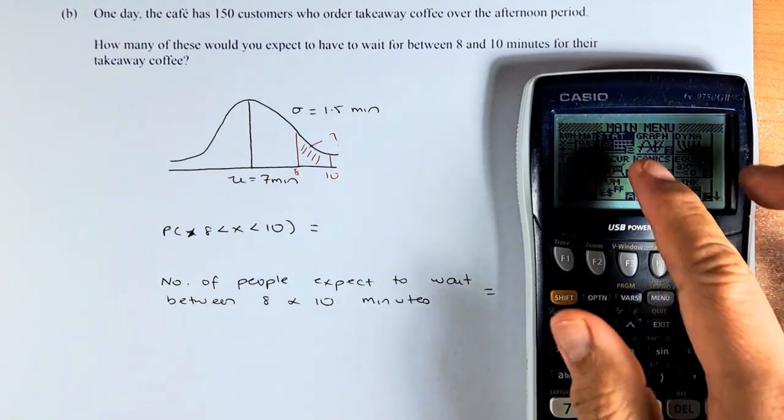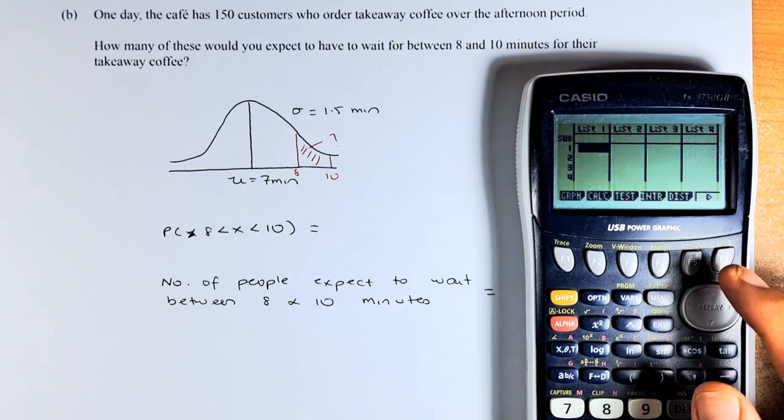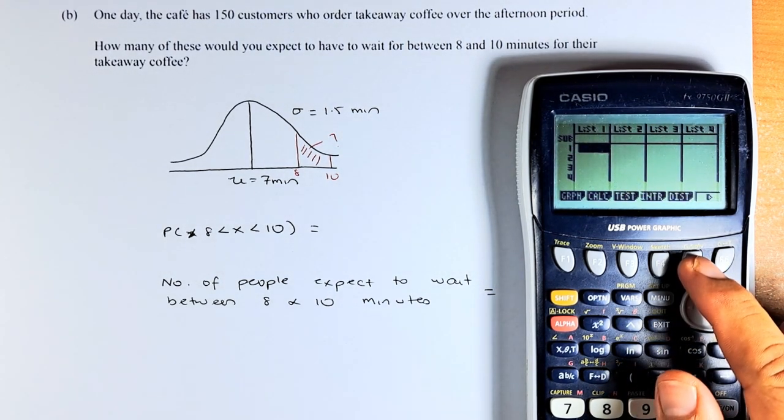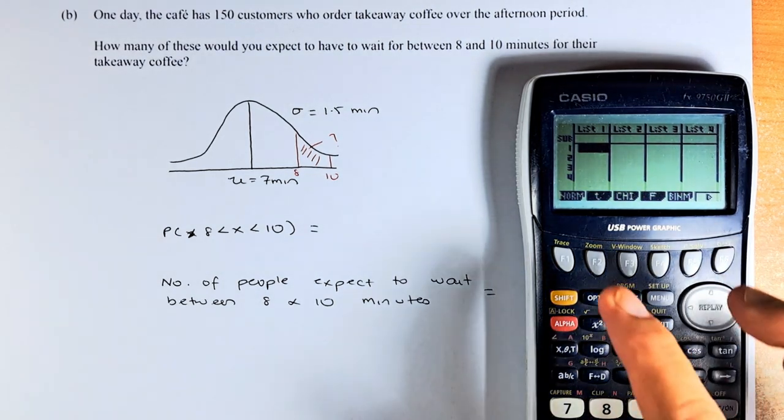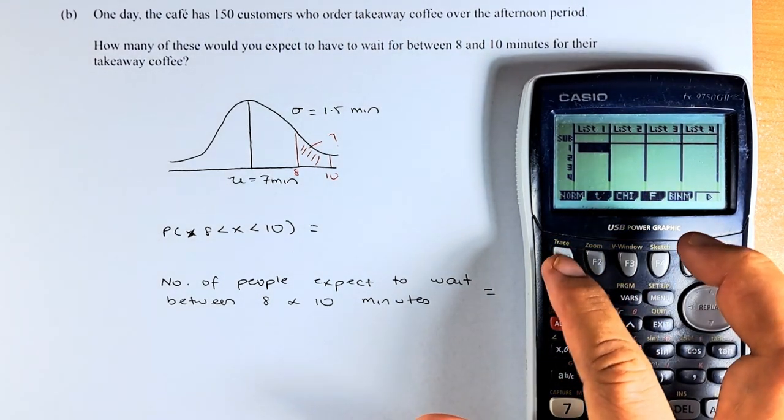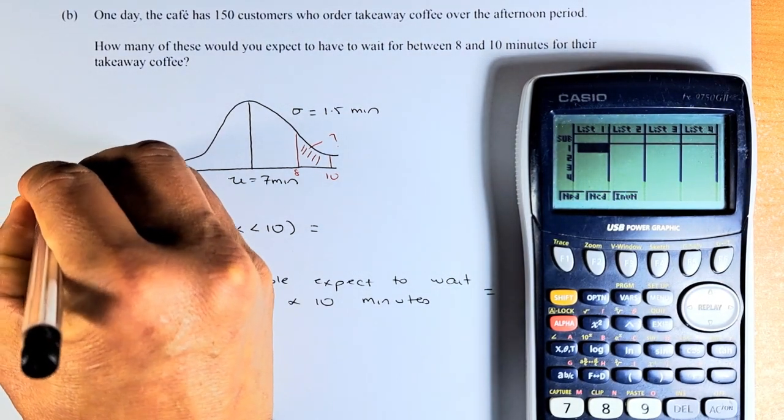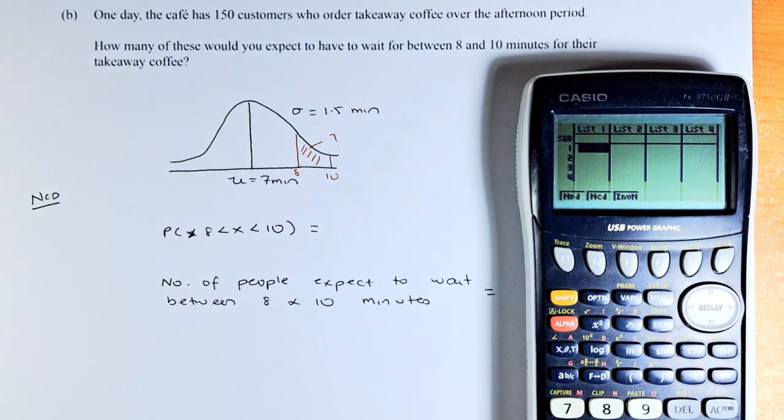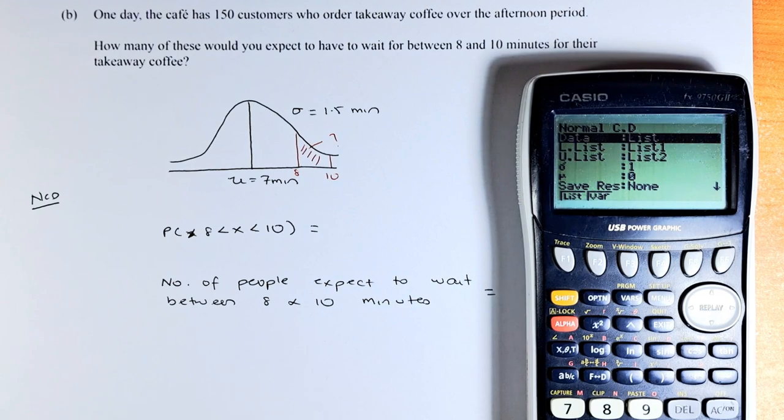We're going to put it under statistics. By now, you should be familiar with this. F5 is distribution. Again, we do it as normal because we are doing normal distribution. F1, normal. As I said, you do NCD for normal distribution because it's a cumulative distribution. So NCD is F2. Now you have done that, we are ready to key in the data.